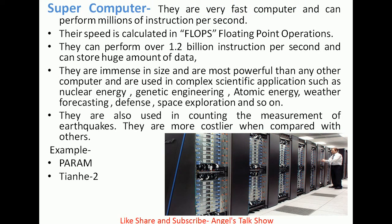The first one is supercomputer. They are very fast computers and can perform millions of instructions per second. Their speed is calculated in FLOPS, meaning floating point operations per second. They can perform over 1.2 billion instructions per second and can store huge amounts of data. They are used in complex scientific applications such as nuclear energy, genetic engineering, weather forecasting, defense, space exploration, and measuring earthquakes. They are more costly compared with others. Examples of supercomputers are PARAM and TIANHE.